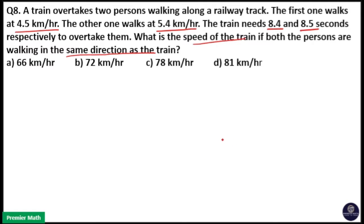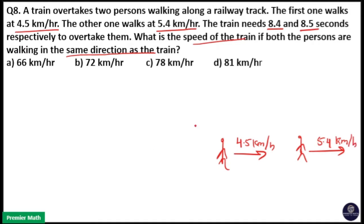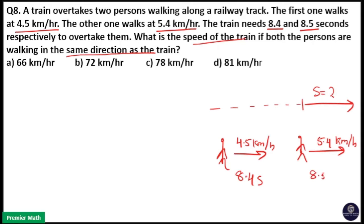Here, two persons are walking in the same direction with speeds of 4.5 km per hour and 5.4 km per hour. A train is overtaking both of these persons — the first person in 8.4 seconds and the second person in 8.5 seconds. We need to find out the speed of this train.